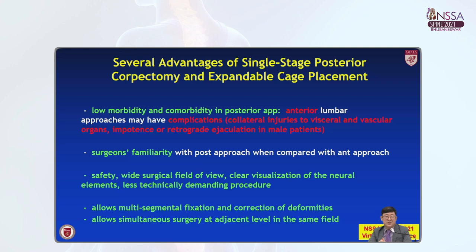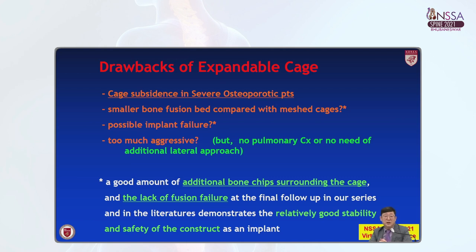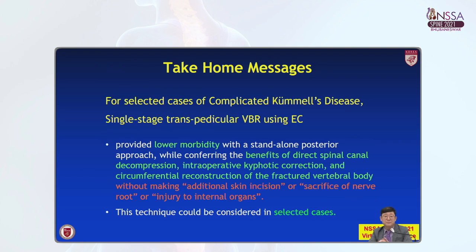This single-stage approach allows multi-segmental fixation and correction of deformity from behind, and allows simultaneous surgery at the adjacent level in the same field. Possible drawbacks include cage subsidence and possible implant failure, but we can place a good amount of additional bone chips surrounding the cages, and lack of fusion failure is one of the good advantages of this method.